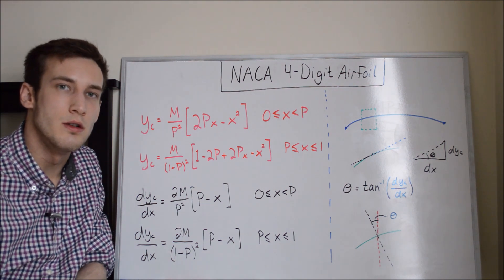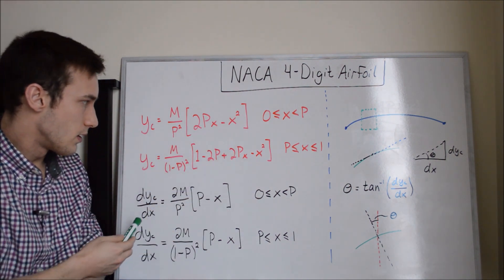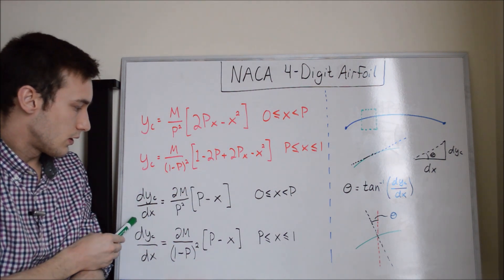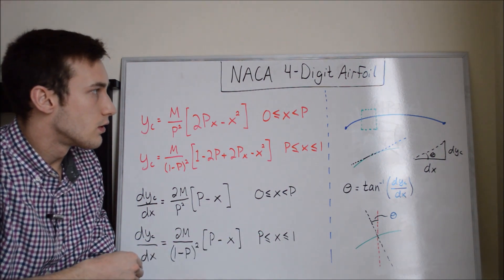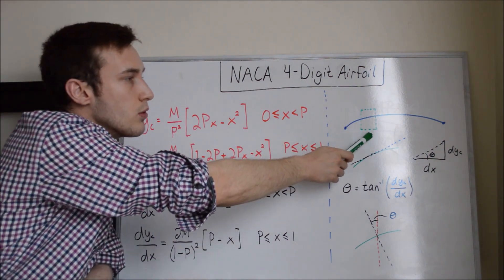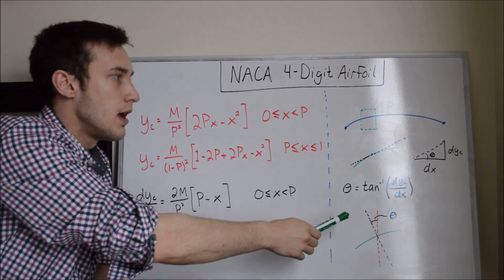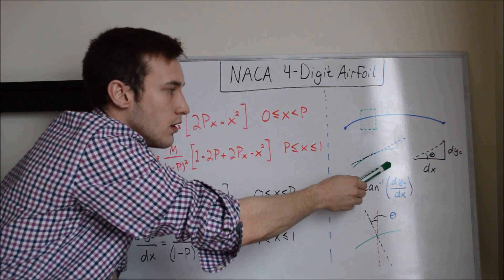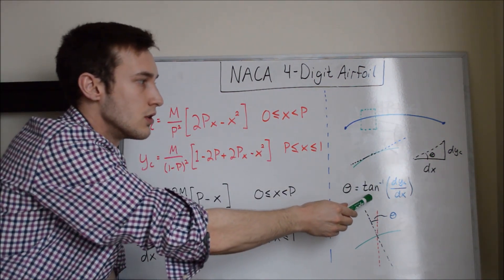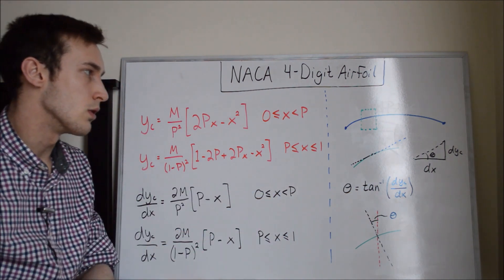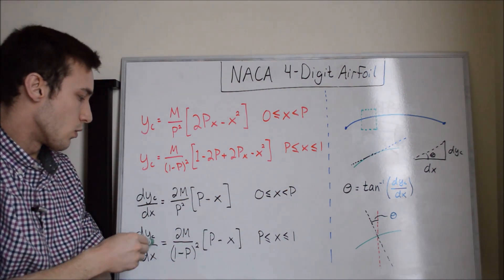The next thing we need is the derivative of the mean camber line equation. Taking the derivative with respect to X gives two expressions — one for the region from the leading edge to P, and one from P to the trailing edge. The angle theta is defined as the inverse tangent of the change in Y over the change in X, i.e., the slope of the mean camber line at any point.